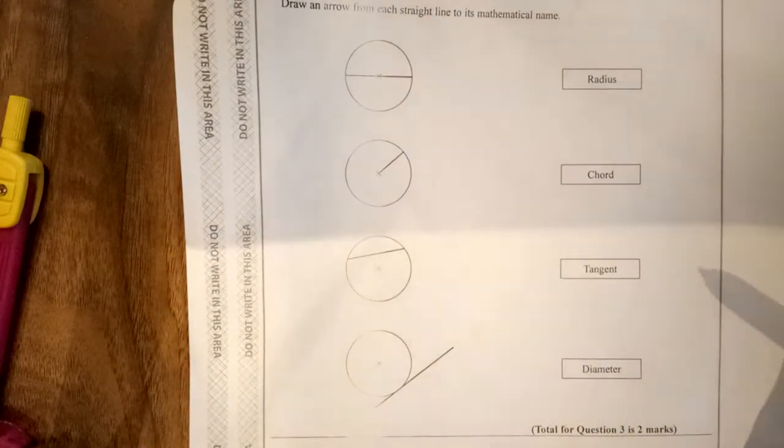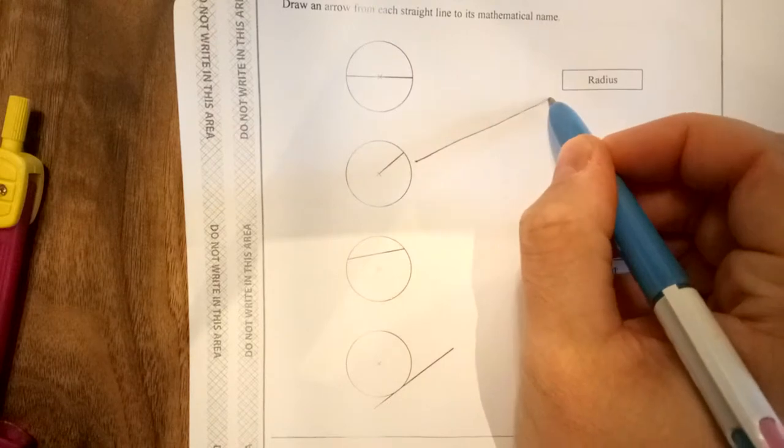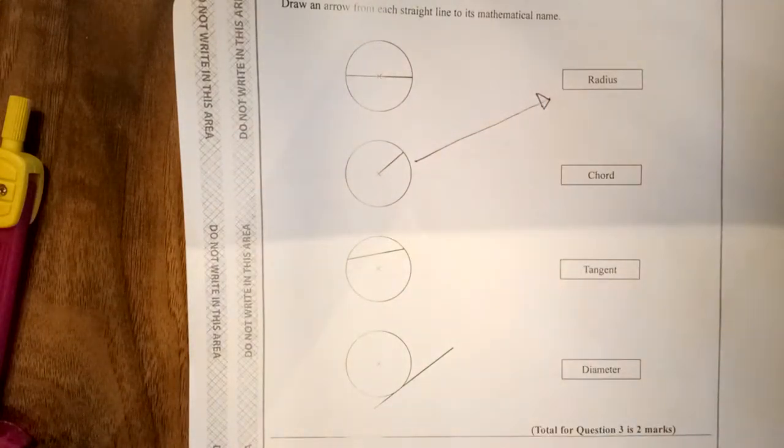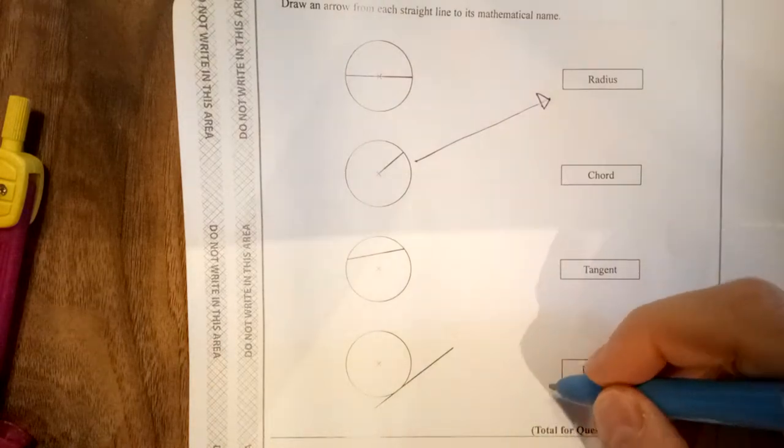Now the radius is one that we should all know. It's halfway across, so let's do the radius first. The next one we should really know is your diameter. This one here.